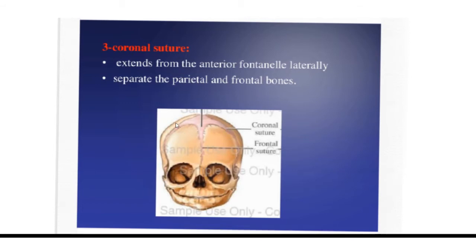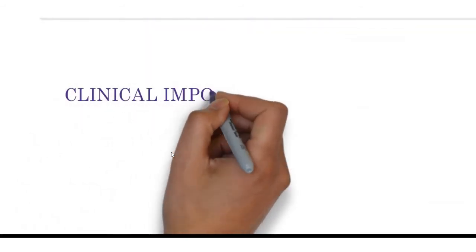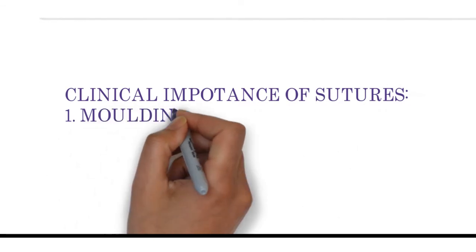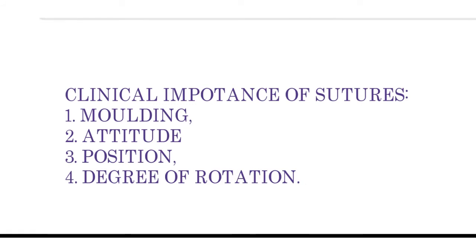The frontal suture is an anteroposterior suture that separates the two frontal bones — right and left — extending from the anterior fontanelle to the glabella. The clinical importance of these sutures is that they help us identify the position, attitude, and degree of flexion of the fetus by palpating the suture lines and fontanelles. The suture lines also help in the process of molding.